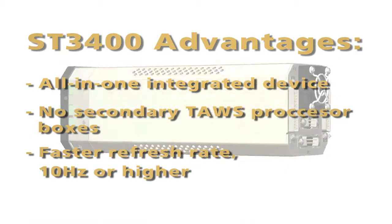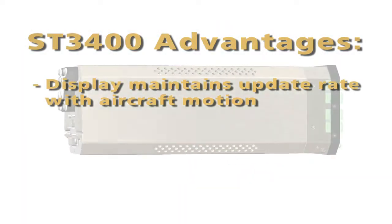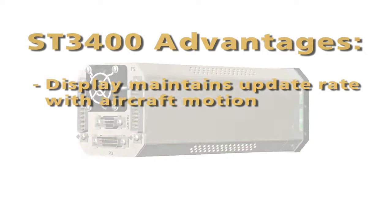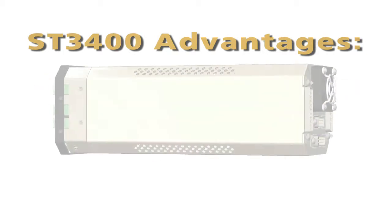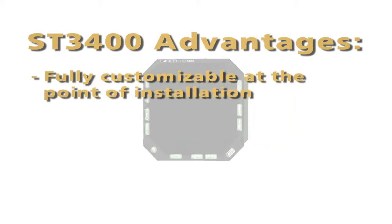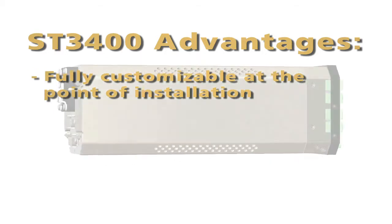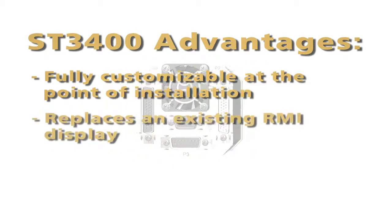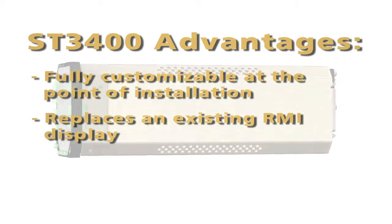So as the aircraft is flying and doing maneuvers, turning and so forth, the display maintains its update rate with the aircraft motion. It is fully customizable at the point of installation, so that you don't have to order a particular dash number or keep track of that complexity. And there's also the dedicated RMI display, which the unit serves as a replacement for that device.